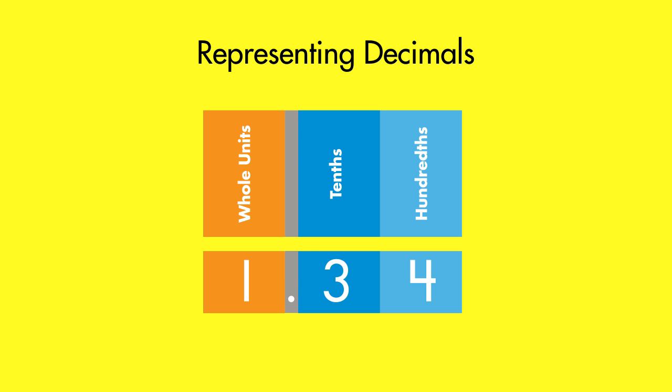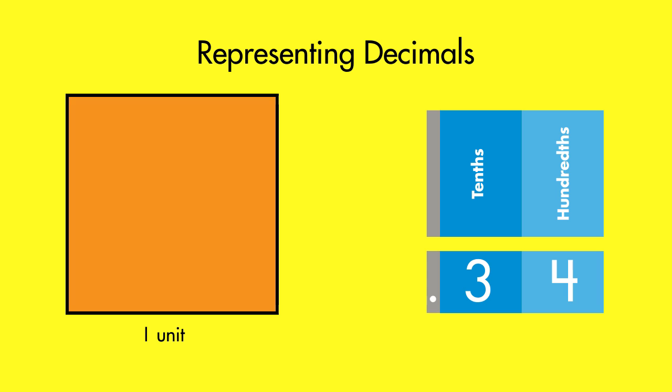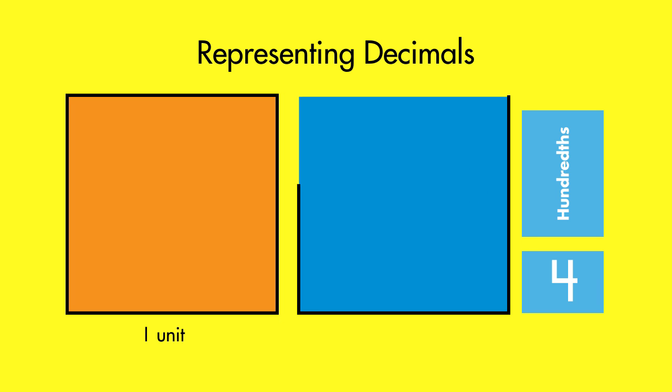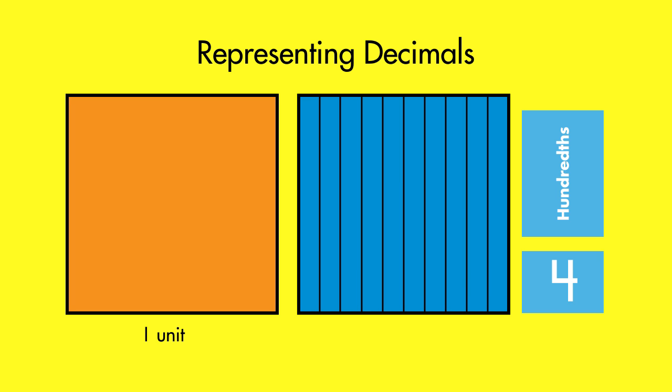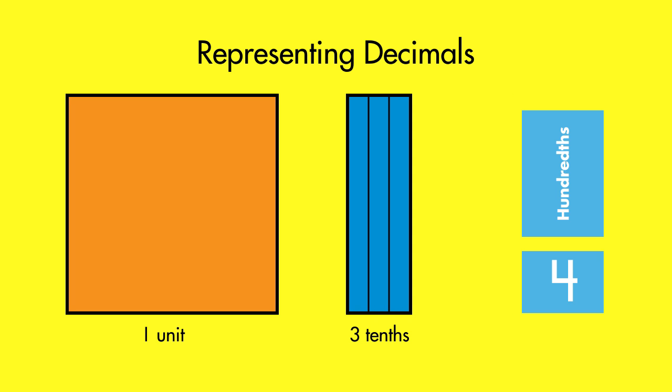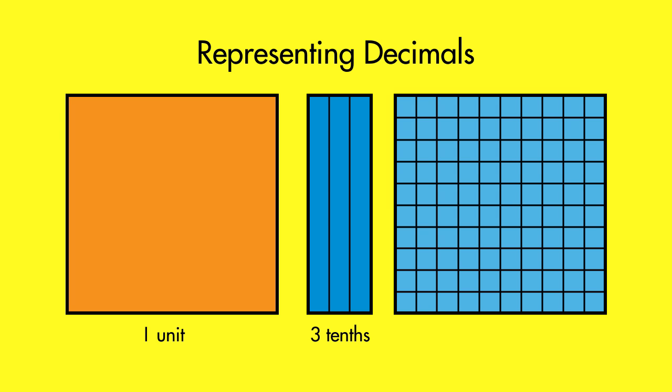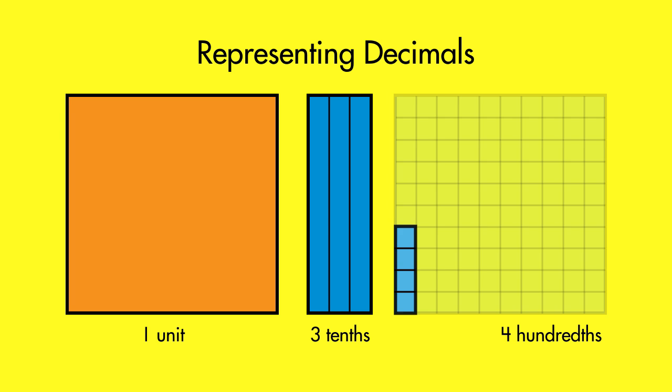First, you represent the whole number as one unit. Then, you represent the 3 tenths as 3 parts of the whole unit when it's divided into 10 parts. Finally, you represent the 4 hundredths as 4 parts of the whole unit when it's divided into 100 parts.